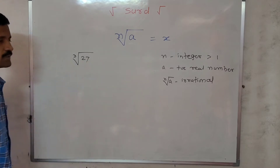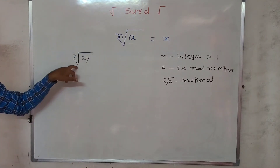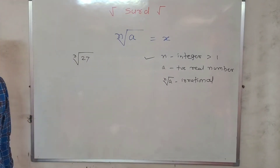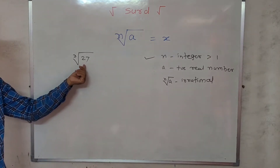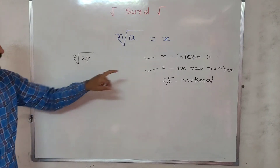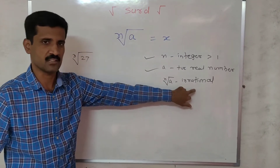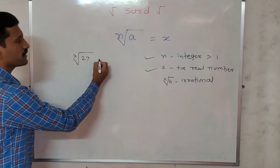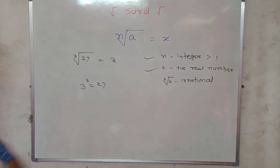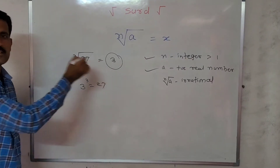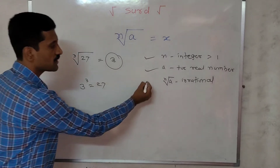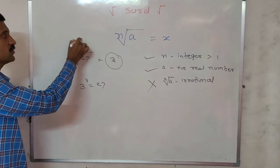Now let us have another example: cube root of 27. The order is 3, which is an integer greater than 1 — first condition satisfied. The radicand 27 is a positive real number — second condition satisfied. Now for the third condition, nth root of a must be irrational. But cube root of 27 is 3, because 3 × 3 × 3 equals 27. Since 3 is an integer it is a rational number, not irrational. So the third condition is not satisfied, and cube root of 27 is not a CERT.